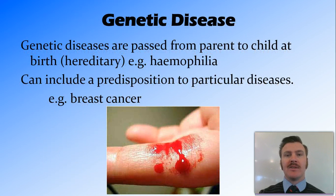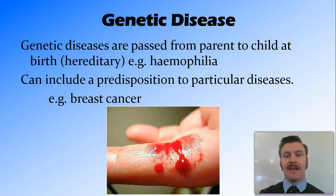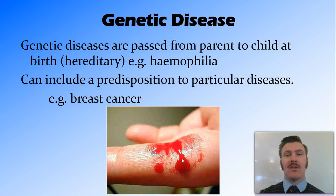We have three different types of non-infectious disease. The first type is a genetic disease. A genetic disease is a disease that is hereditary and is passed on from parent to child. An example of a genetic disease is hemophilia, which is a disease that stops the blood clotting properly, meaning that when you cut yourself you keep on bleeding and have to go to hospital to get a clotting factor.